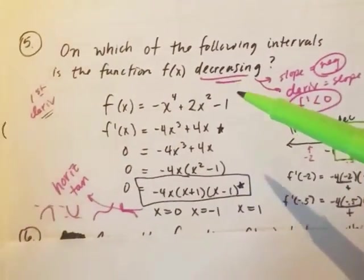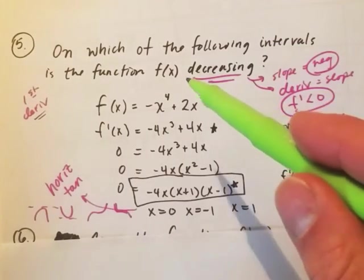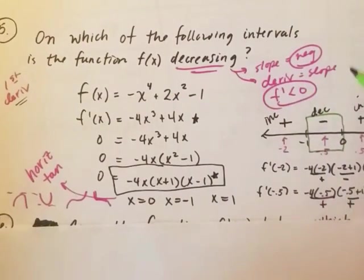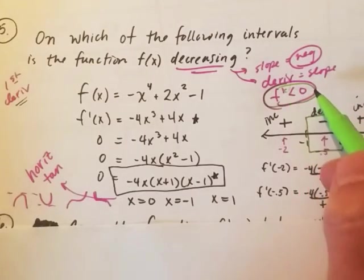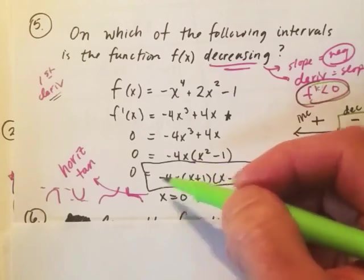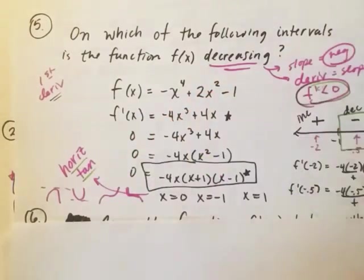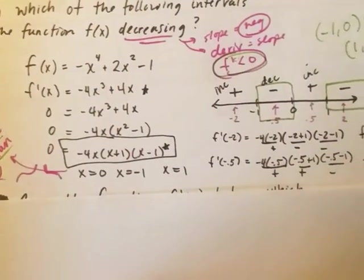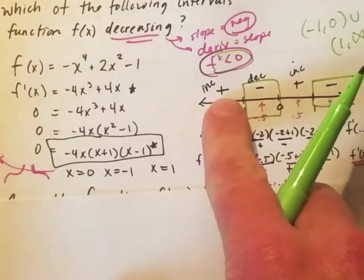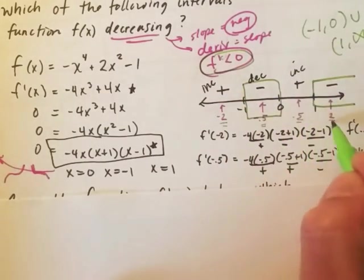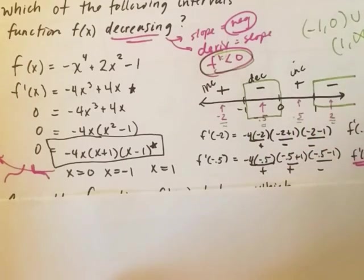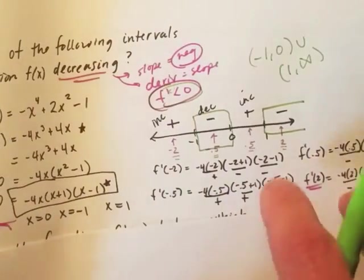It started with our annotations. Knowing that if we need to find if f(x) is decreasing, we really need to find f' and find when the slope, the derivative, was negative. So we found that derivative, set it equal to 0 to find our critical numbers, where usually it changes. And then over here, we actually plugged in numbers in between to tell us what the entire interval in between those critical numbers were doing. And that's where we get those intervals here.